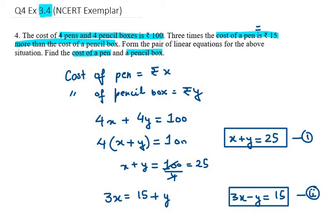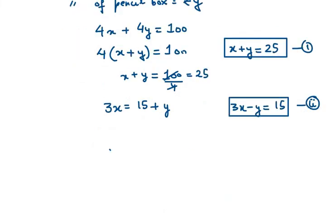Now we need to simplify first equation and second equation, then we can get the value for x and y. Rewriting these equations as x + y = 25 and 3x - y = 15. Now we need to add these equations.